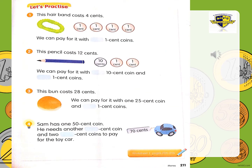Okay, KG2, can I request you to bring your pupil's book so we can follow together. I'm going to read and explain, and then you can solve the problems in your book. Page number 211. Let's practice. Question number one: this hairband costs 4 cents. It shows that it costs 4 cents. So how can we pay the 4 cents? There are four 1-cent coins. So we're going to write here number four — four 1-cent coins. It's really easy, isn't it, KG2?